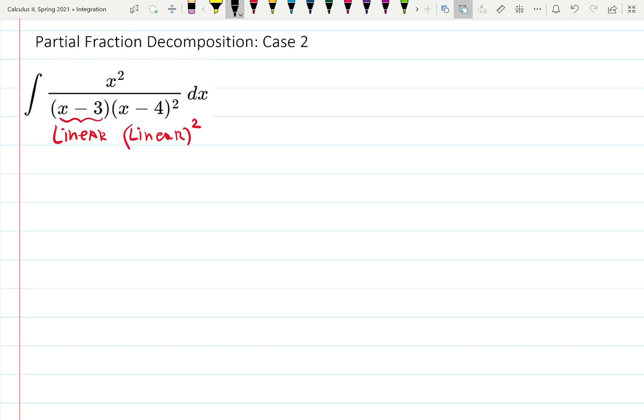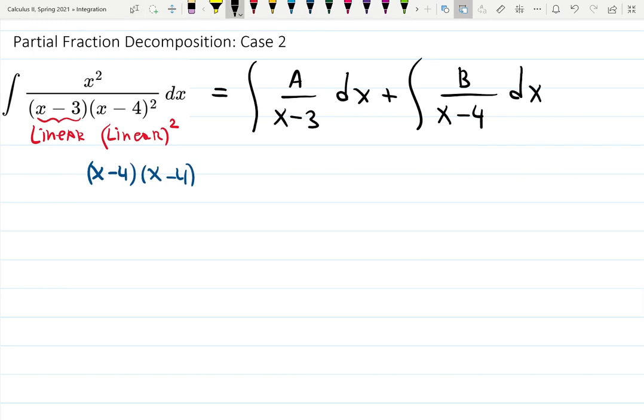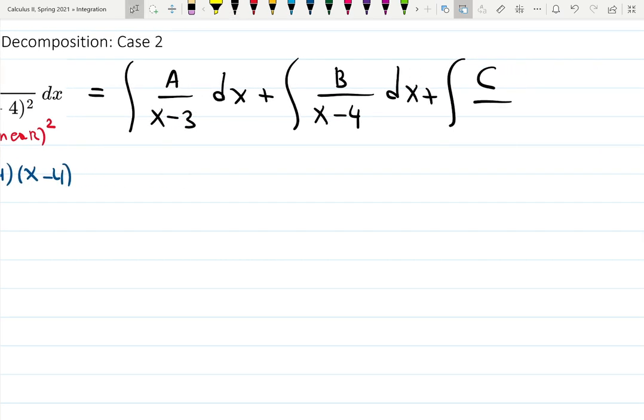We're going to break this integral into several integrals, which is going to be A over x minus 3. That's going to be my first piece, plus B over x minus 4. But since x minus 4 repeated twice, I will write down one more piece, which is going to be C over x minus 4 squared.